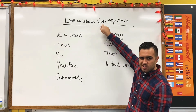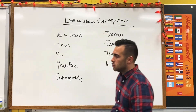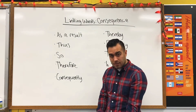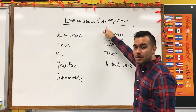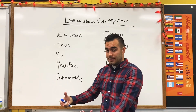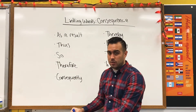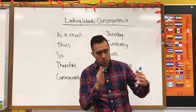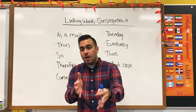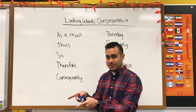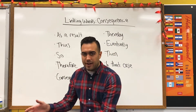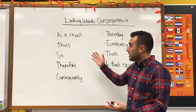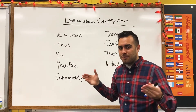Last video we talked about addition. In this video we're going to talk about consequence — linking words for consequence. A consequence is something that happens as a result: if you do this, because you did that, this happened. Cause and effect — that is a consequence. We have words that will link other situations together.